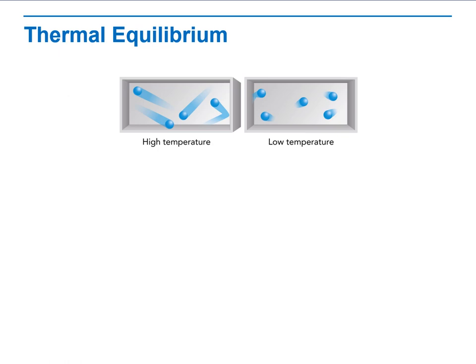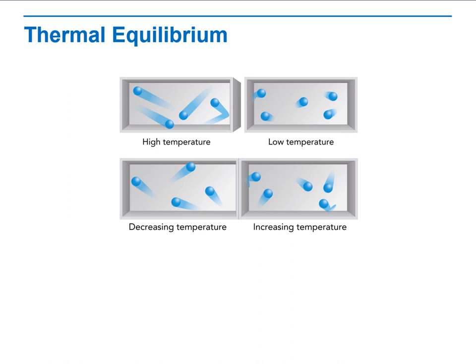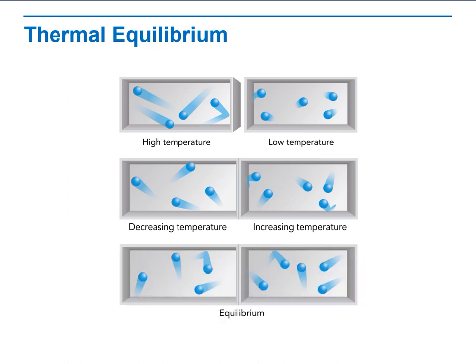Now, we will talk about what happens when you push two objects together so that they are in contact. Eventually, the objects reach the same temperature. The warmer object decreases in temperature while the cooler object increases in temperature, until they reach equilibrium. How can we describe thermal equilibrium in terms of kinetic energy? The average kinetic energy of the particles within both objects will be equal. Thermal equilibrium is a very important concept.